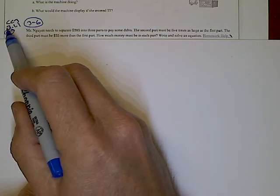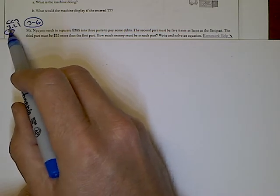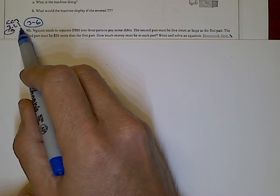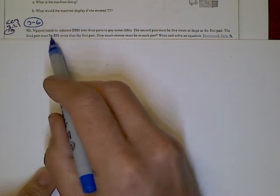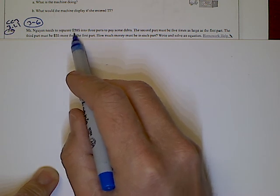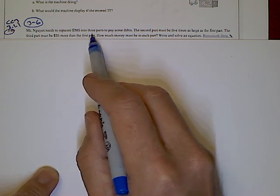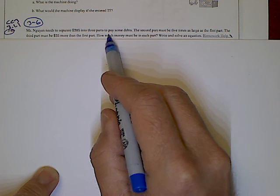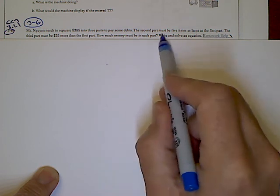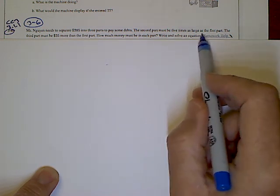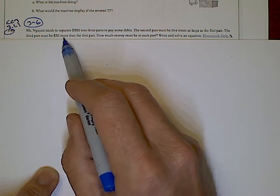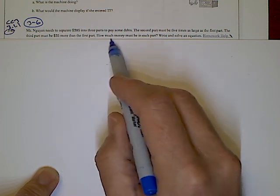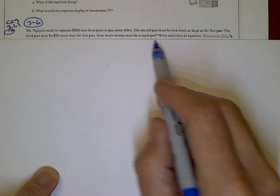Alright, we're looking at CC3, section 3.1.1, problem 3-6. Mrs. Nguyen needs to separate $385 into three parts to pay for some debts. The second part must be five times as large as the first part, and the third part must be $35 more than the first part. How much money must be in each part? We need to write and solve an equation.